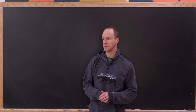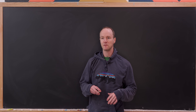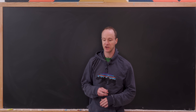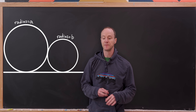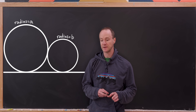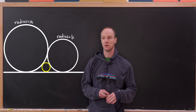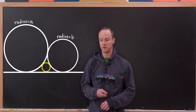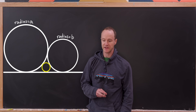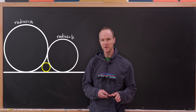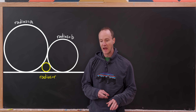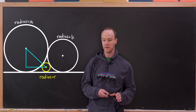Let's back up and look at a more general version of the starting question. Let's say we've got a straight line, a circle of radius A, and a circle of radius B all touching, and we inscribe a circle between the straight line and those two circles. Let's find the radius of that inscribed circle.